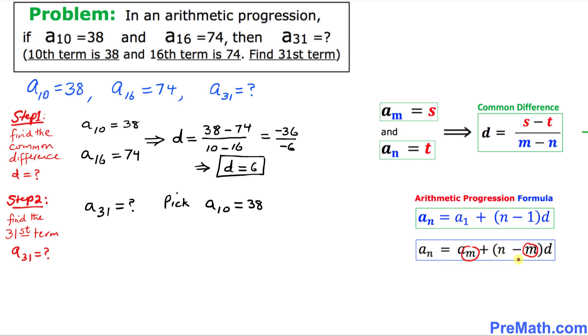This general form of this arithmetic progression formula is a sub n equals a sub m plus n minus m times d. So thus in our case over here I'm gonna call this 31 as an n and this 10 as an m, and now I am going to write down this formula right up here.